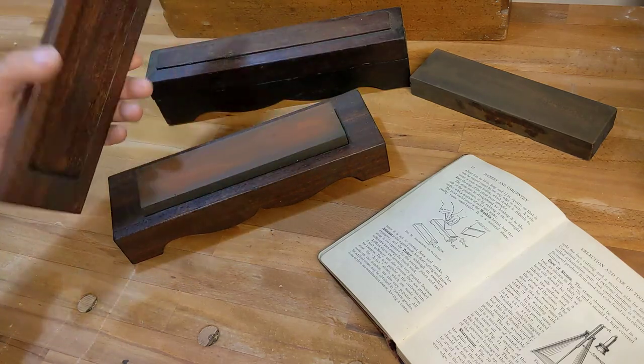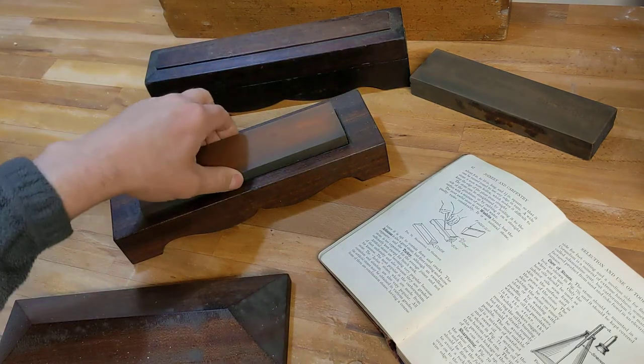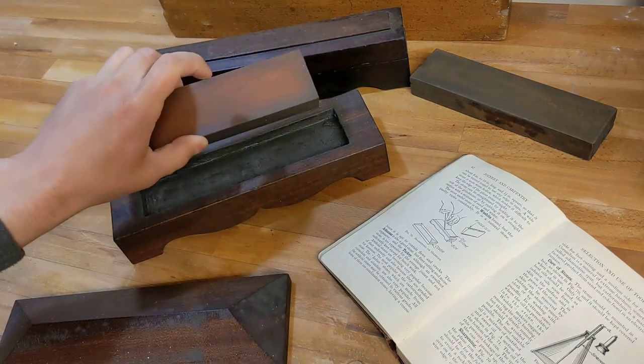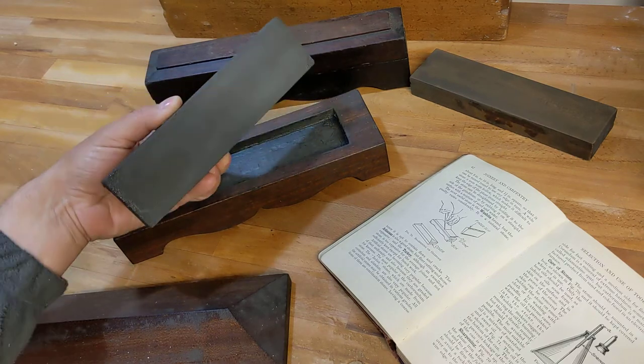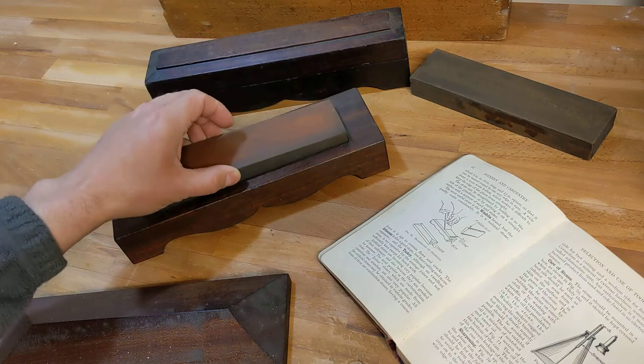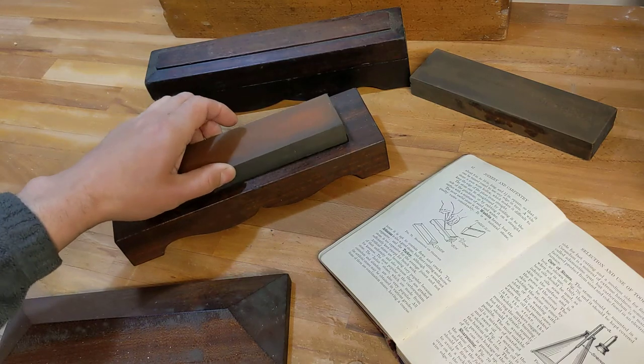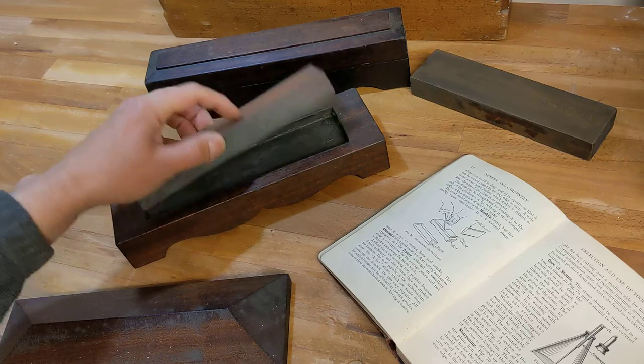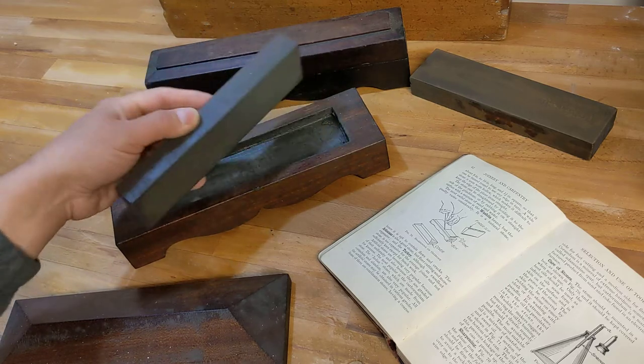The one I use most often is a Norton India stone. The finest side of this, the orange, is about 400 grit and the underside the grey one is maybe 150. Top is aluminum oxide, the underside is silicon carbide.